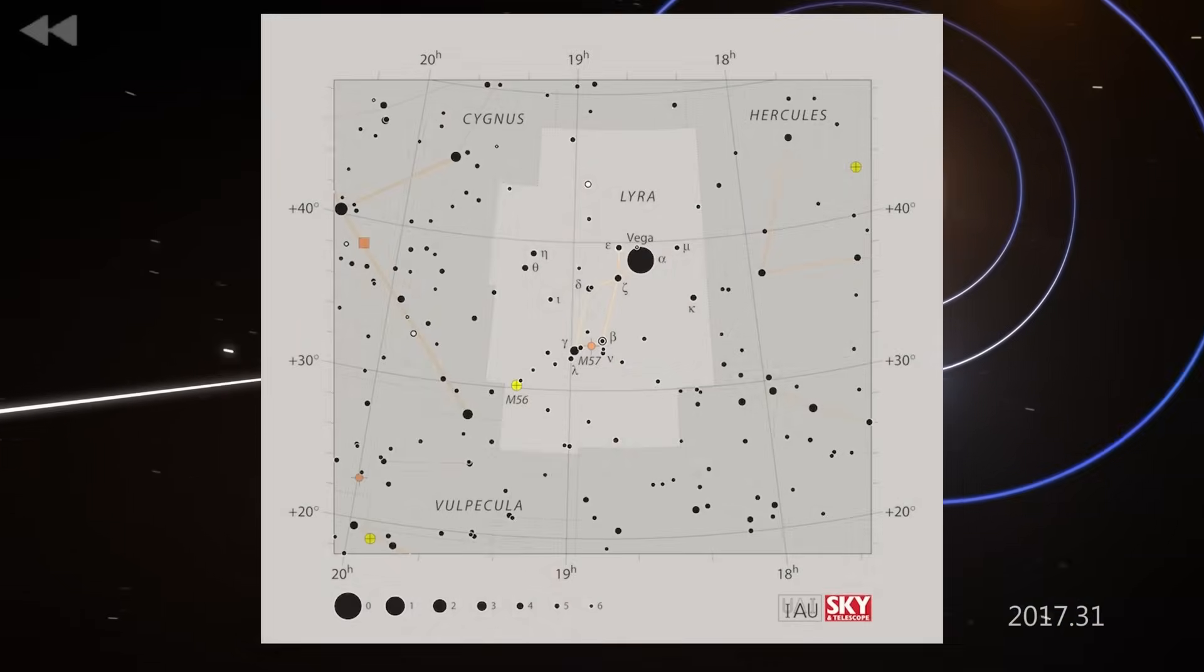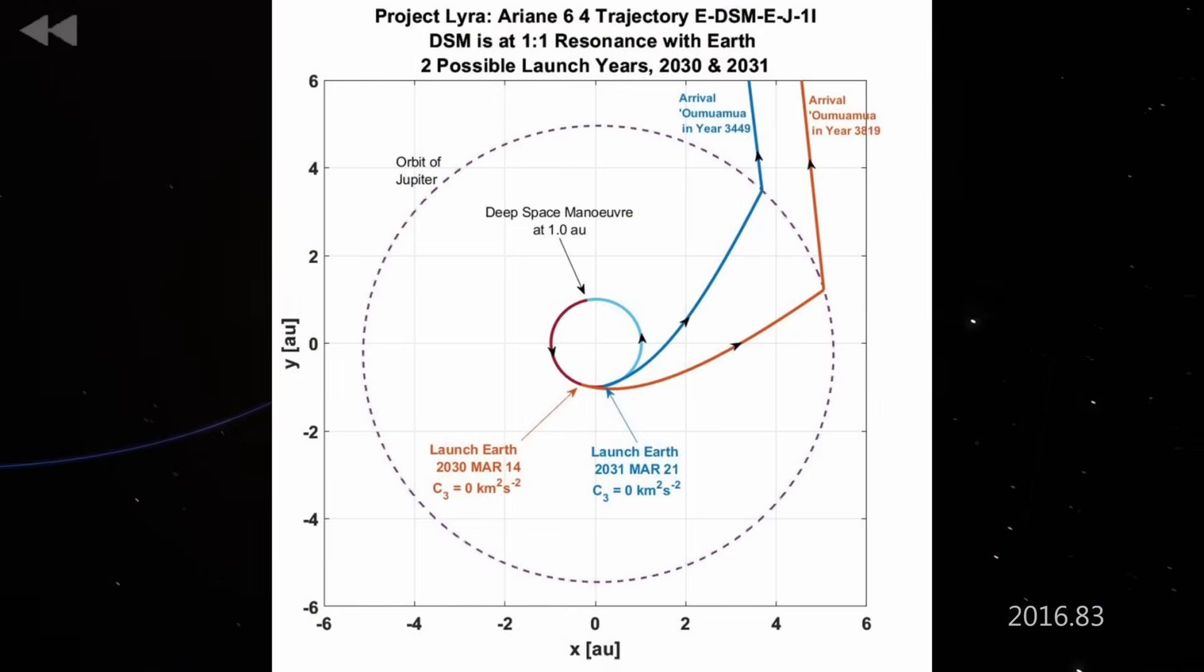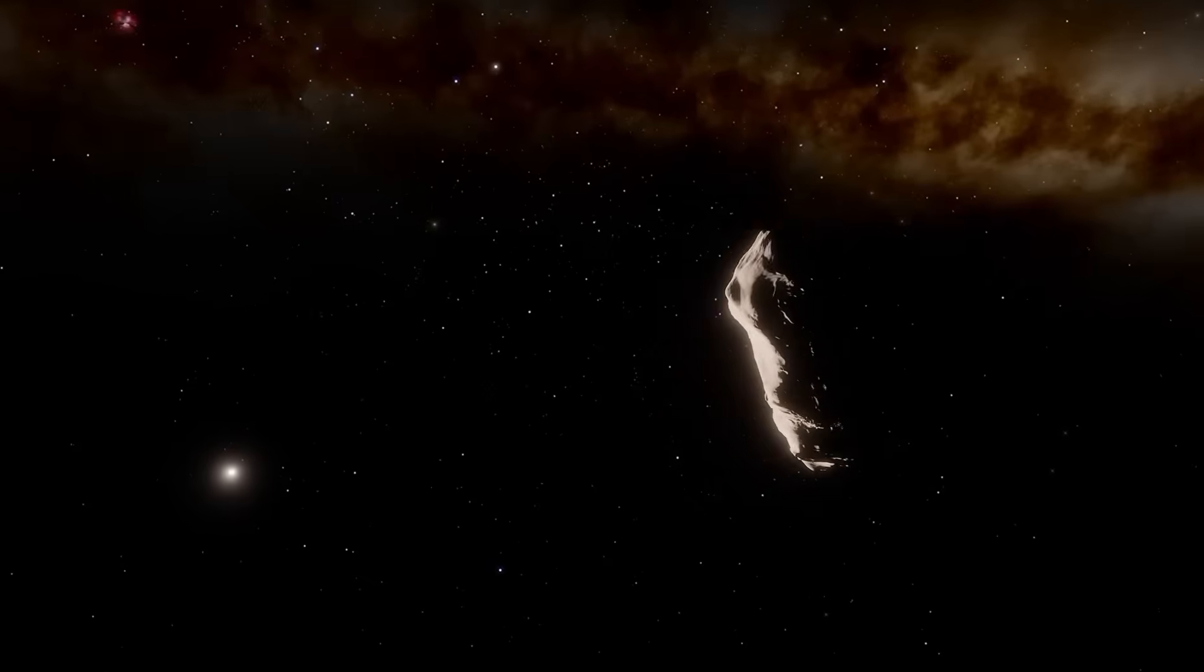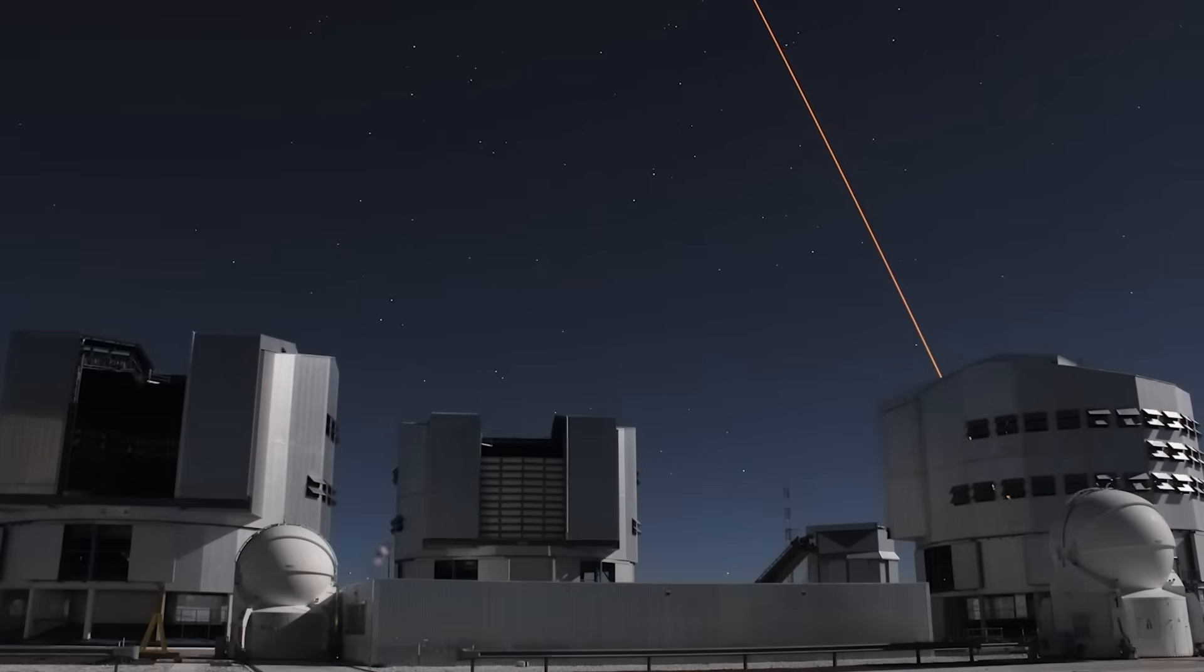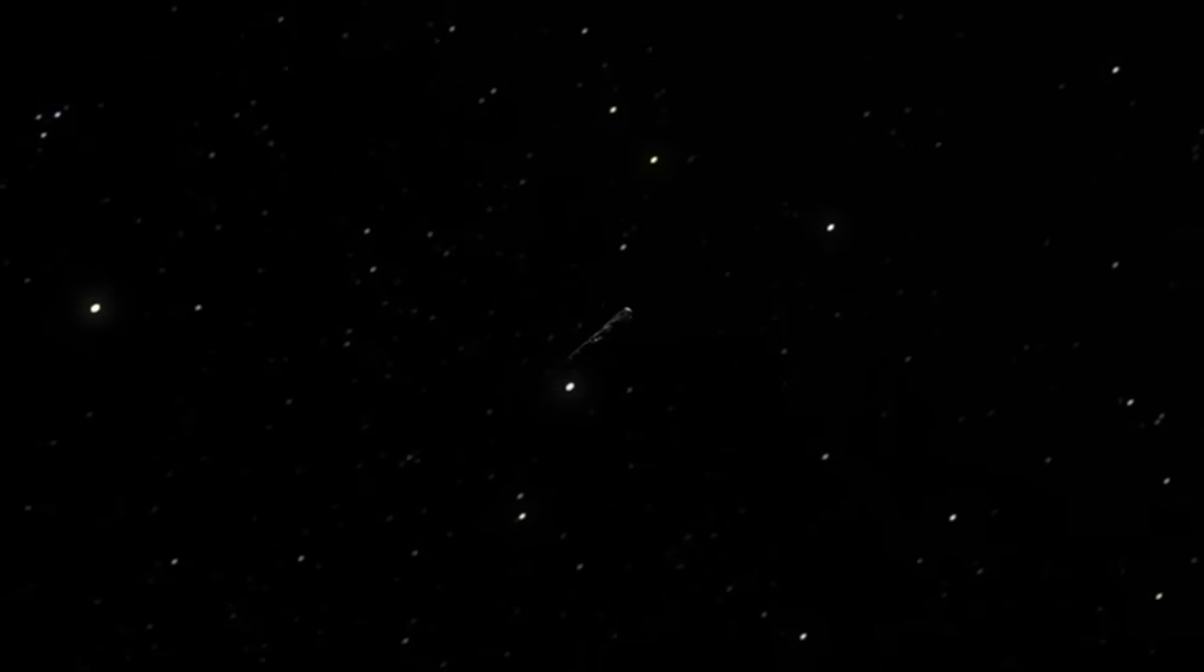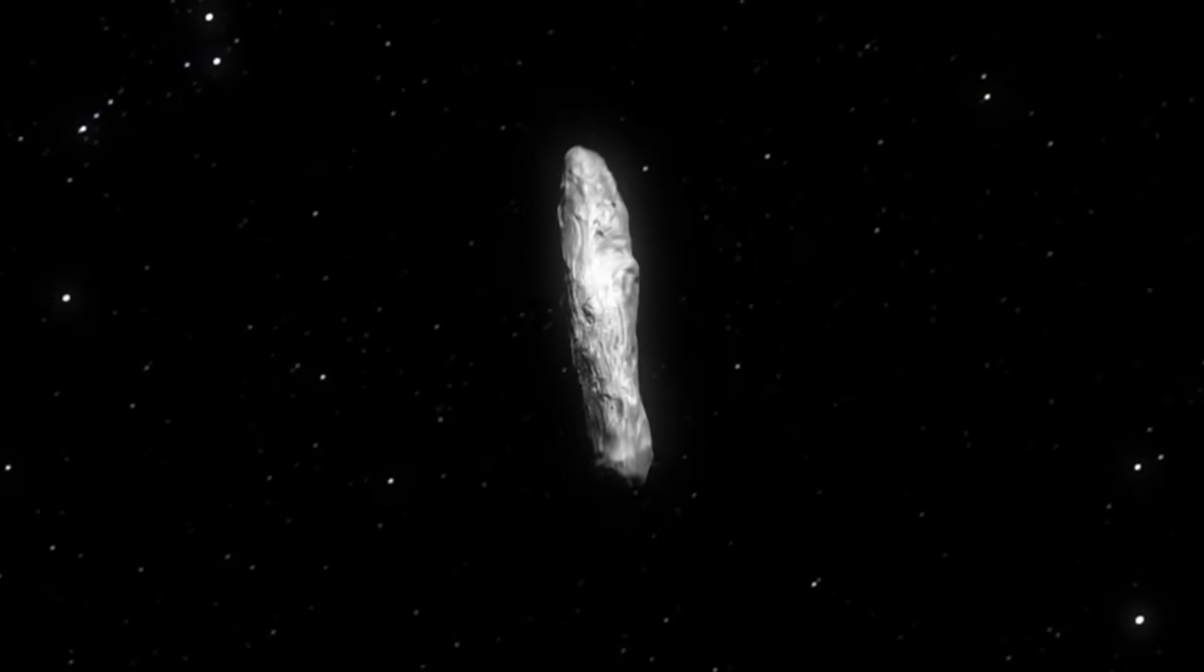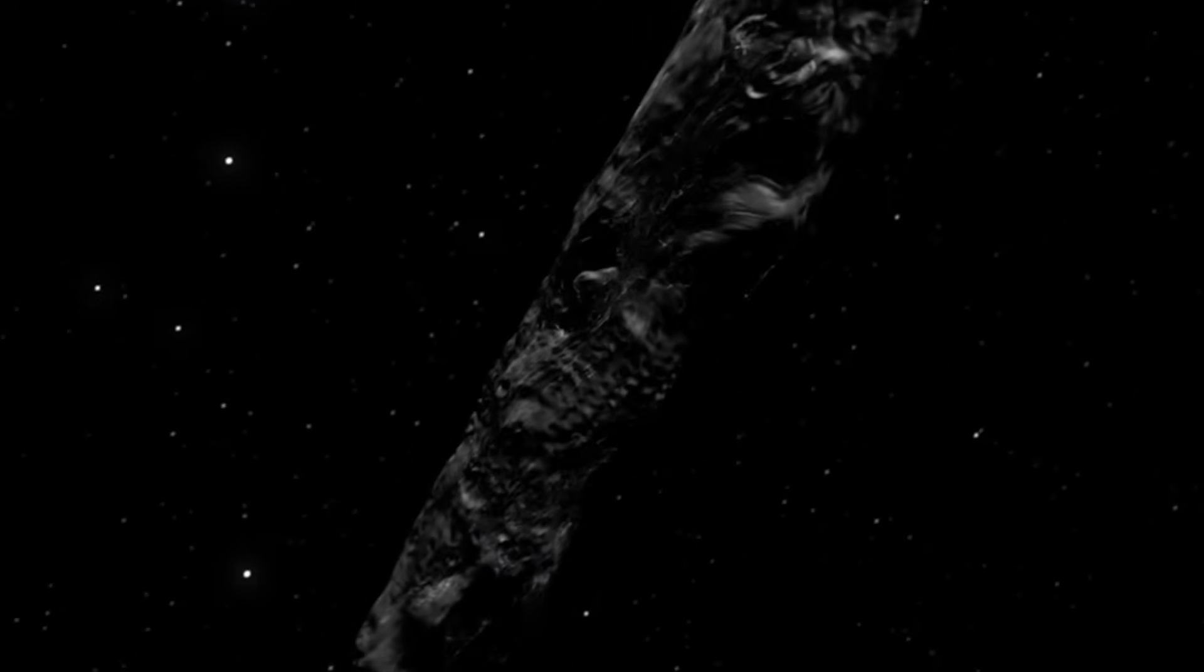Project LIRA, a bold initiative from the Initiative for Interstellar Studies, says we can. Their mission is simple in concept, but nearly impossible in execution. Design a spacecraft fast enough to intercept Aumuamua, even though it's already billions of kilometers ahead.